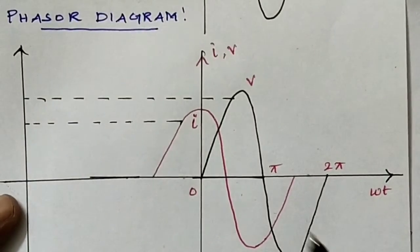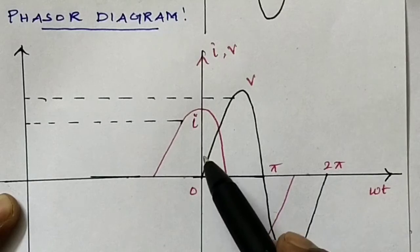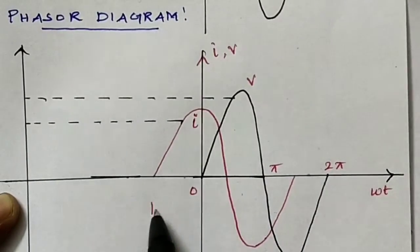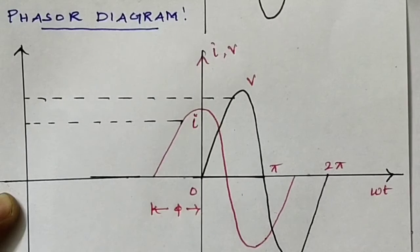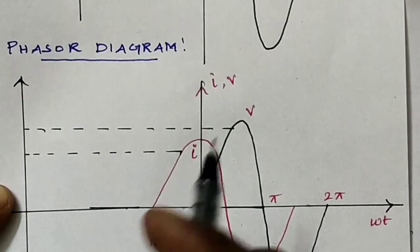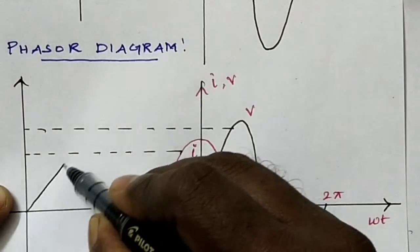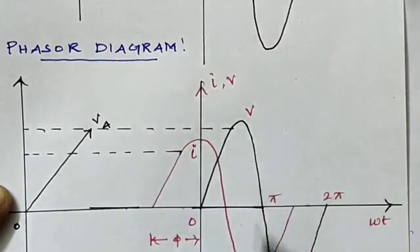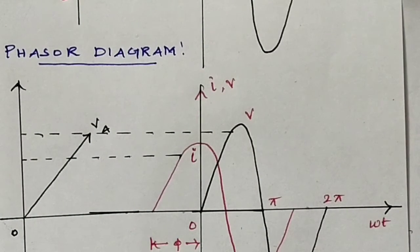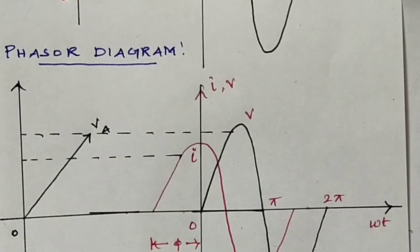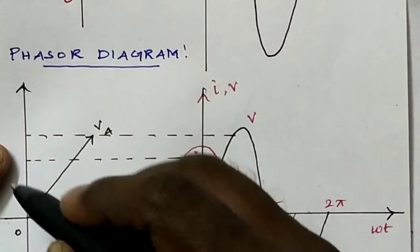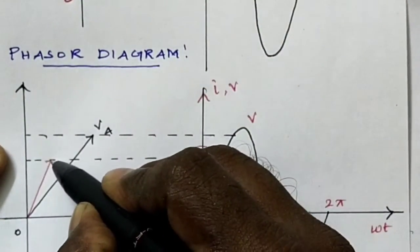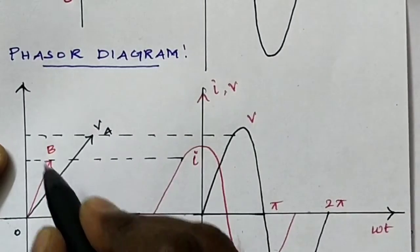In the phasor diagram, we draw two phasors: one is the voltage and another one is the current. Here, current leads the voltage by angle phi. First, draw the voltage phasor OA — the length of line segment OA is the peak value of the alternating voltage. Then draw the current phasor OB, where OB indicates the maximum peak value of the current.